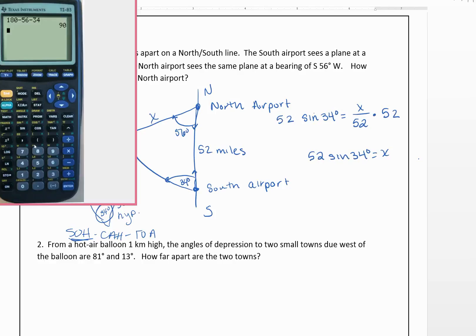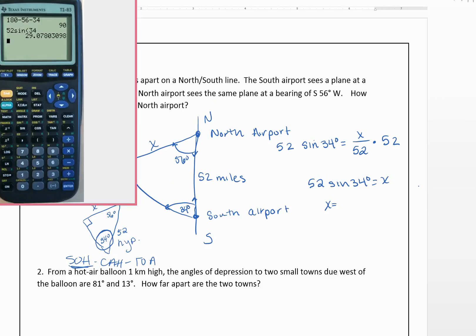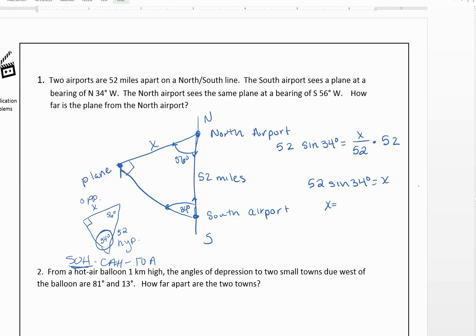Make sure your calculator is in degrees. So 52 sine of 34 degrees. So we see that x was about 29.1 miles.